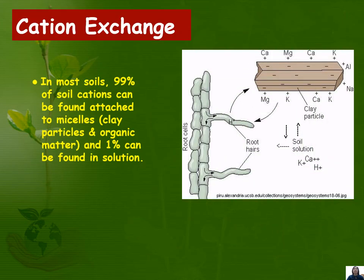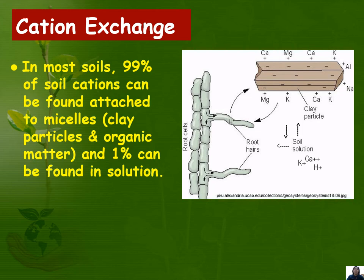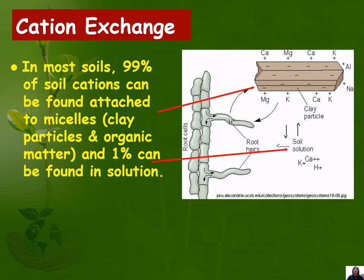In most soils, 99% of soil cations can be found attached to micelles — those micelles being the clay particles and the organic matter — and 1% can be found in the soil solution. The arrow shows an illustration of a clay particle with attached or adsorbed ions such as calcium, magnesium, aluminum, and sodium. Another arrow points to the soil solution where you can find ions of potassium, calcium, and hydrogen.